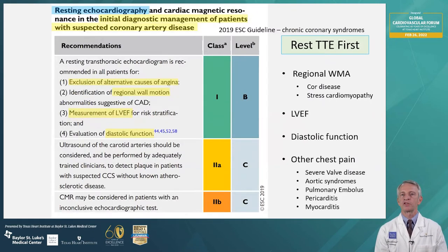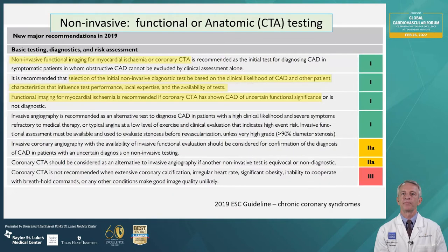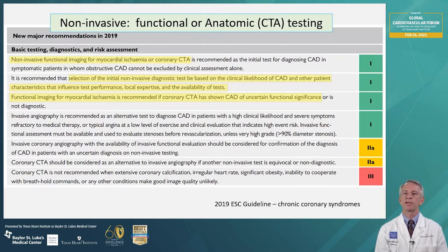Importantly, recommendations from the 2019 ESC guideline include the recommendation for resting transthoracic echocardiogram as the initial test in the management of patients with suspected coronary disease. This is to rule in or rule out other non-CAD causes of chest pain that could be cardiac in origin, including regional wall motion abnormality detection, determining ejection fraction, and diastolic dysfunction. Noninvasive functional testing for ischemia or CTA is recommended as an initial test in patients in whom coronary artery disease cannot be excluded by a clinical assessment alone.